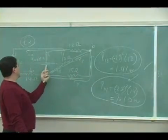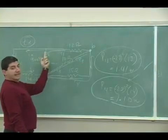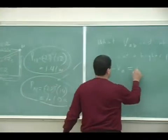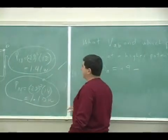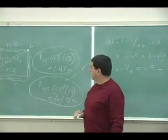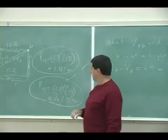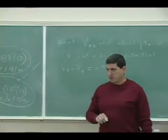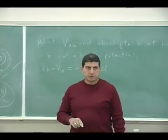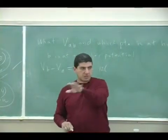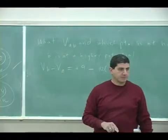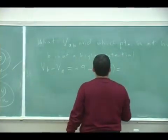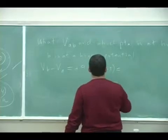If we go up the battery, we're going to gain nine volts. Then we're going to lose I1 times 12, right? What was the current going through the 12 ohm resistor? So look back at the circuit that we got: 0.5. So that's going to be six, three volts.